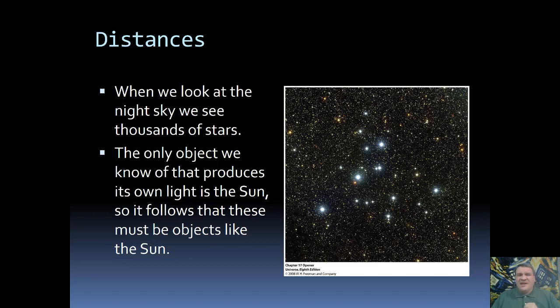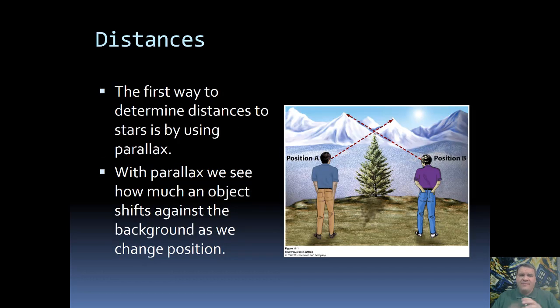Well if they are things like our sun then they're probably really far away which is why they're not as bright as our sun. So we then want to figure out how far away are they?